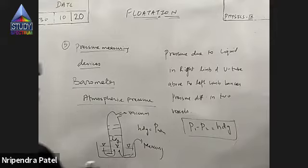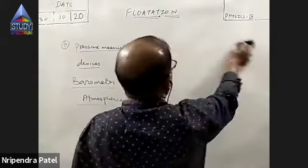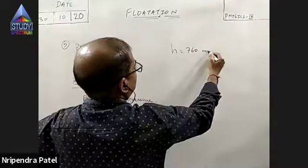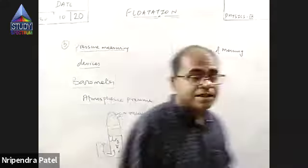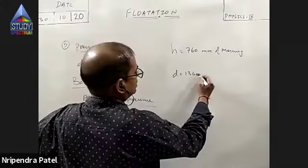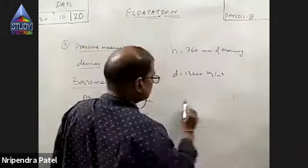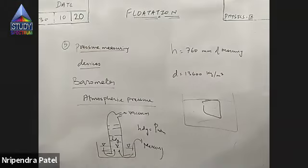There will be a stage when the pressure due to the atmosphere is balanced by the pressure due to the mercury column inside the tube. That height comes out to be 760 millimeters of mercury. This is important information — one should remember: this height comes out to be 760 millimeters of mercury.